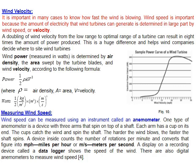As wind speed increases, the power generated increases accordingly. The formula for wind power is: P = ½ρAv³, where ρ is air density, A is the swept area of the rotor, and v is the wind velocity cubed. This cubic relationship means that even small increases in wind speed produce large gains in power output.